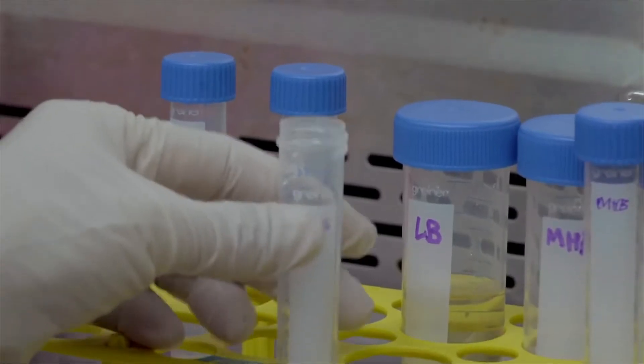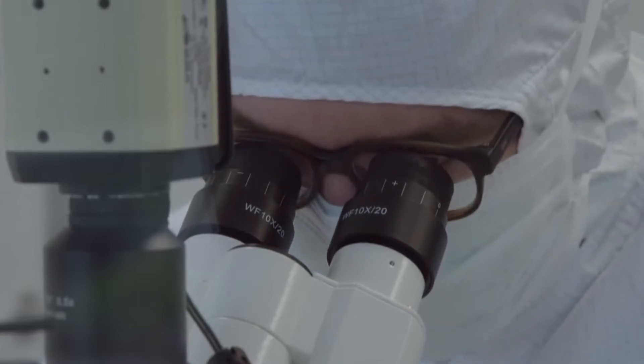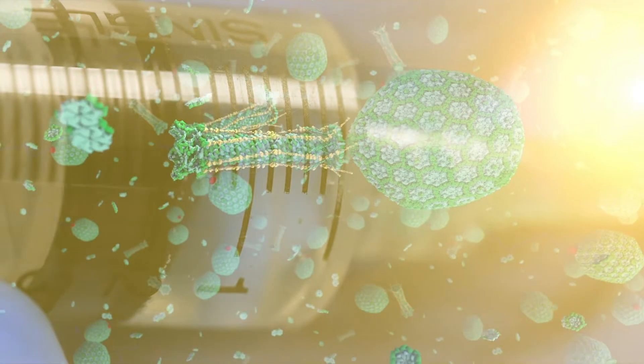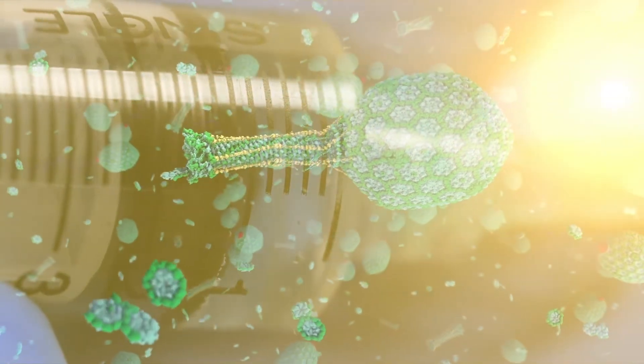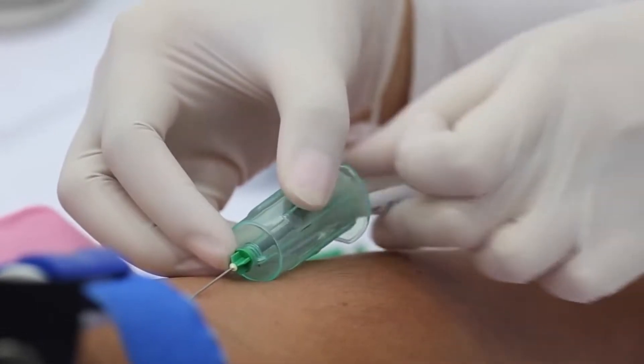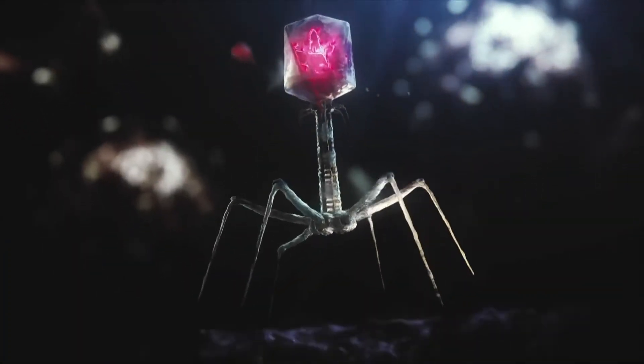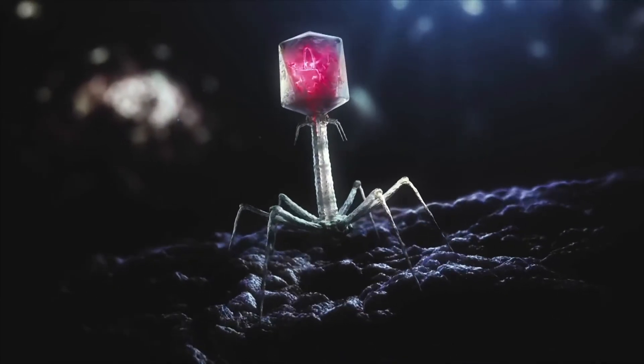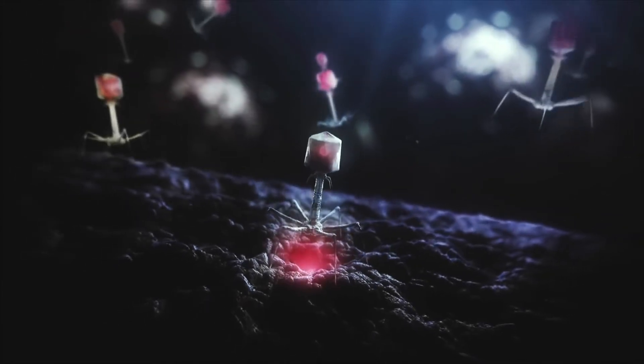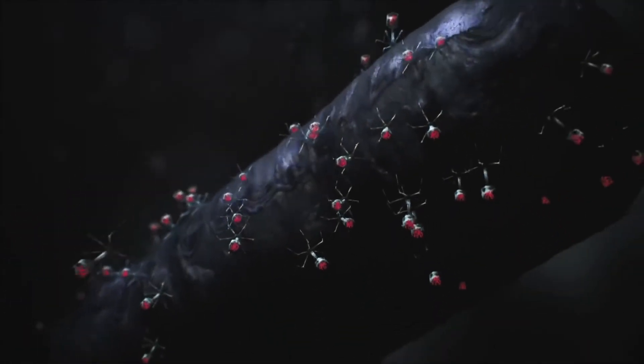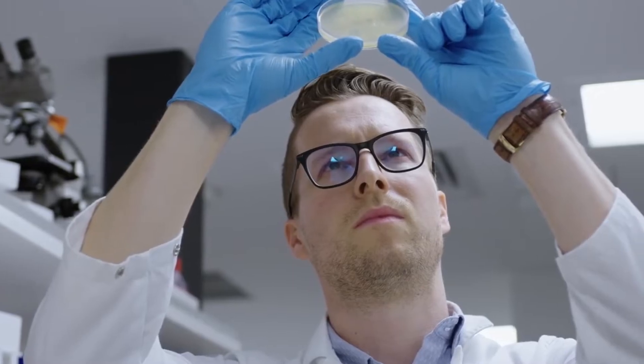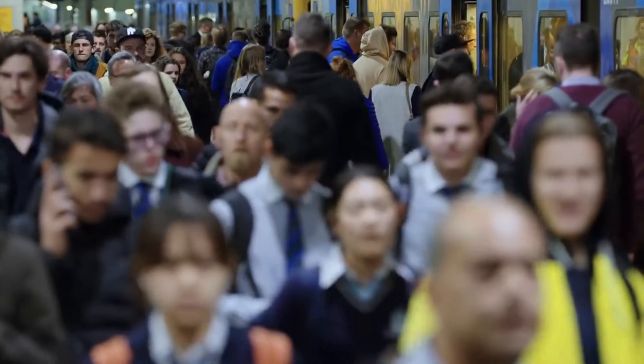Well, enter stage right, phages. These microscopic terminators could end up being our saving grace. Hear me out, we can inject phages into our bodies to help cure infections. How could injecting millions of viruses into an infection be a good idea, you ask? Well, phages are very, very specialized killers of bacteria. So specialized, in fact, that humans are completely immune to them. Simply put, we are too different. We encounter billions of phages every year and you know what happens? Absolutely nothing. We just politely ignore each other.